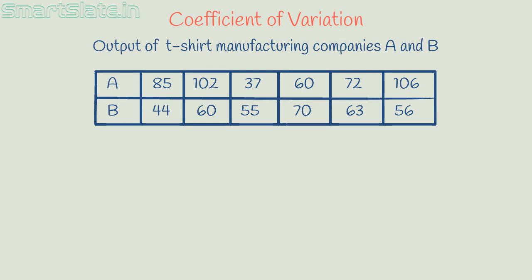If you see the mean of these data, you find factory A has larger output. But it doesn't mean factory A is consistent.